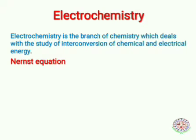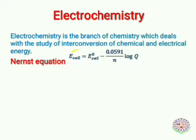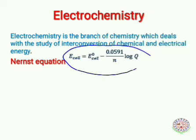We will discuss some numericals on the Nernst equation. The Nernst equation is: E cell = E° cell − (0.0591 / n) × log Q, where Q is the reaction quotient, n is the number of electrons involved in the cell, E° cell is the standard cell potential, and 0.0591 applies at 298 K.